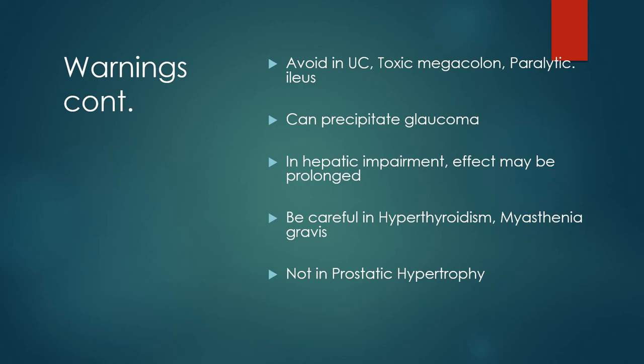Be careful in hypothyroidism and myasthenia gravis. In prostatic hypertrophy, we will not use atropine — prostatic hypertrophy on its own leads to urinary retention and UTI. Adding atropine, a known anticholinergic agent, on top of that is a double burden.